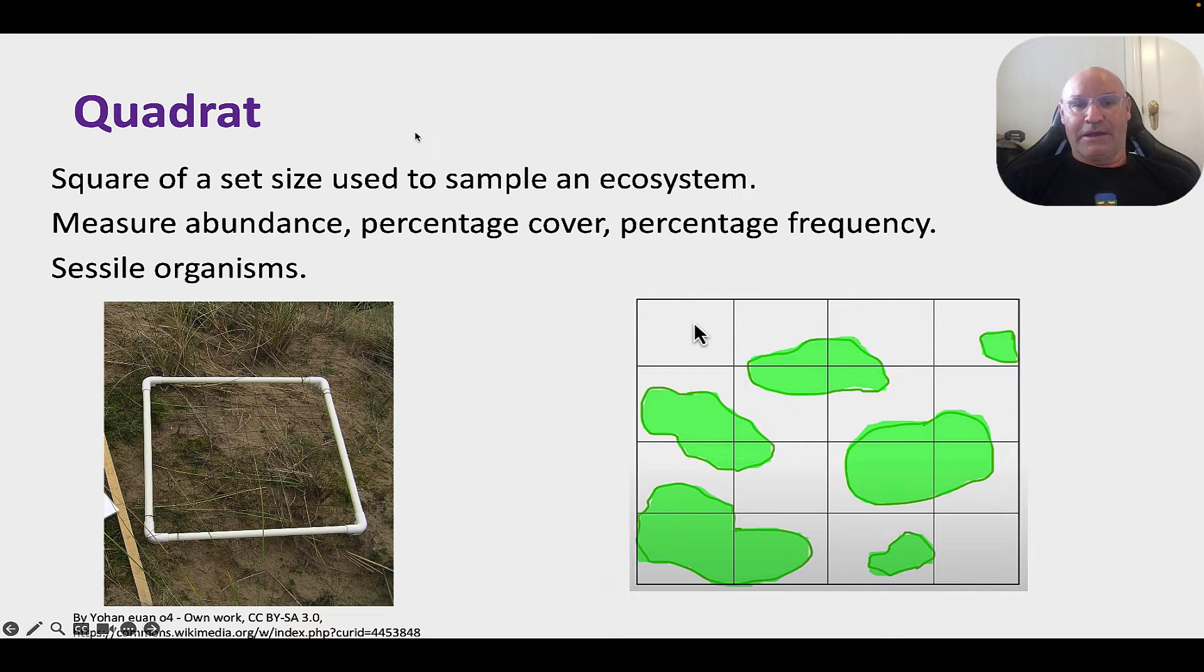We can use it to measure abundance. So, how many organisms? And, of course, percentage cover. We're going to estimate. And also, percentage frequency. You know, is it present or is it not present? It's ideal for sessile organisms. Sessile means organisms that don't move.